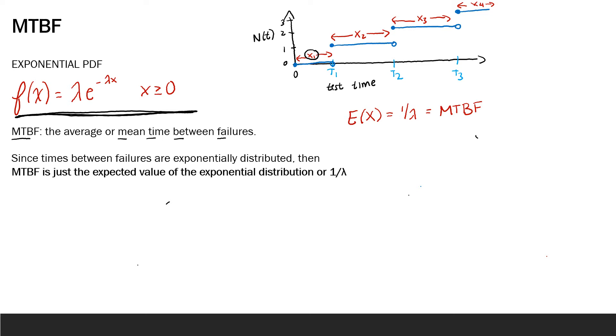So since these times between failures are exponentially distributed, then the mean time between failures is just the expected value of the exponential distribution, which is 1 over lambda.